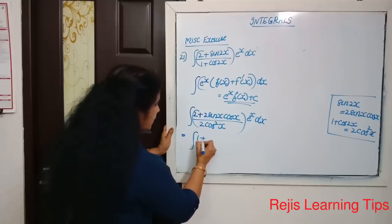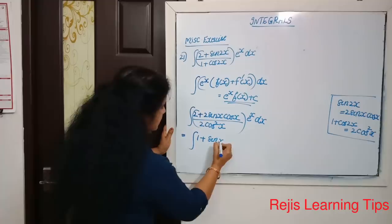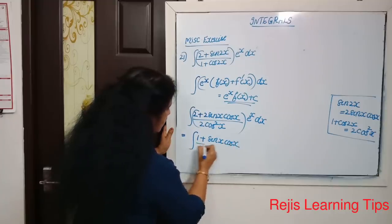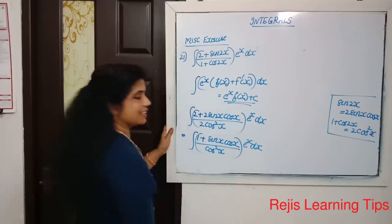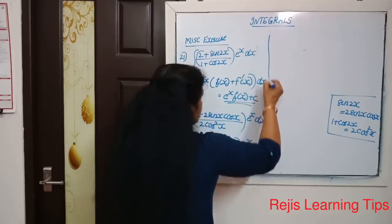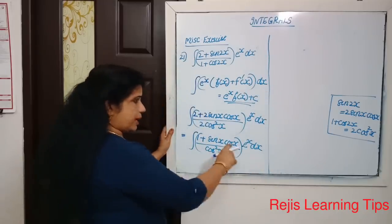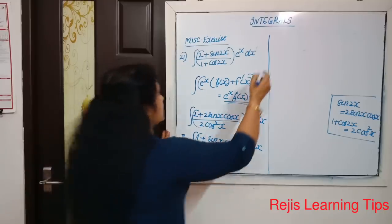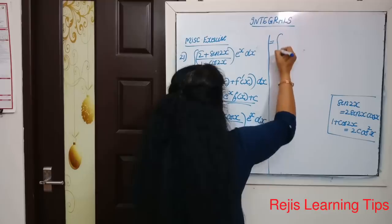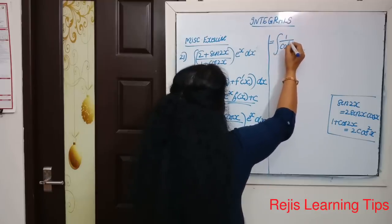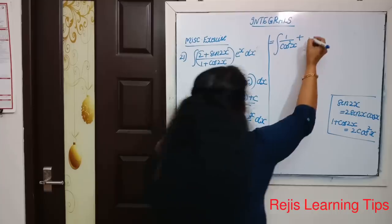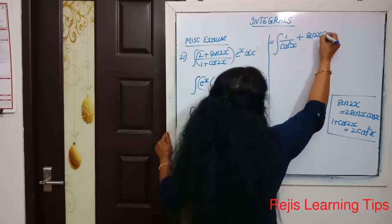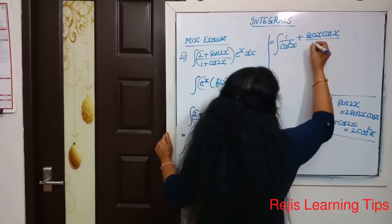After canceling the 2s, we get the integral of (1 + sinx·cosx) divided by cos²x, times e raised to x dx. We then split the numerator: this becomes the integral of [1/cos²x + sinx·cosx/cos²x] times e raised to x dx.